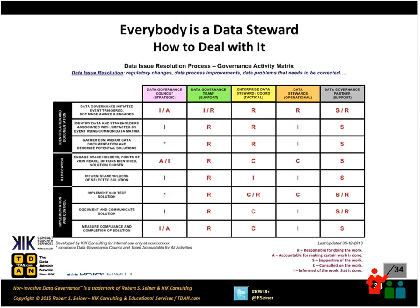RACI stands for responsible, accountable, consulted, and informed. I've seen organizations that have added the S for supportive. If we can define the steps of a process and the different roles that make up our data governance program, then we should be able to define who's responsible, who's accountable, who should be consulted, and who should be informed. I call this a governance activity matrix. Shannon will share that everybody attending the webinar will get links to all of these templates. They make a lot of sense because they're a very simplistic way of looking at how to deal with the fact that everybody is a data steward. We need to engage the operational data stewards and engage the data governance council when need be — that's all part of governance and the governance processes we define within our organization.